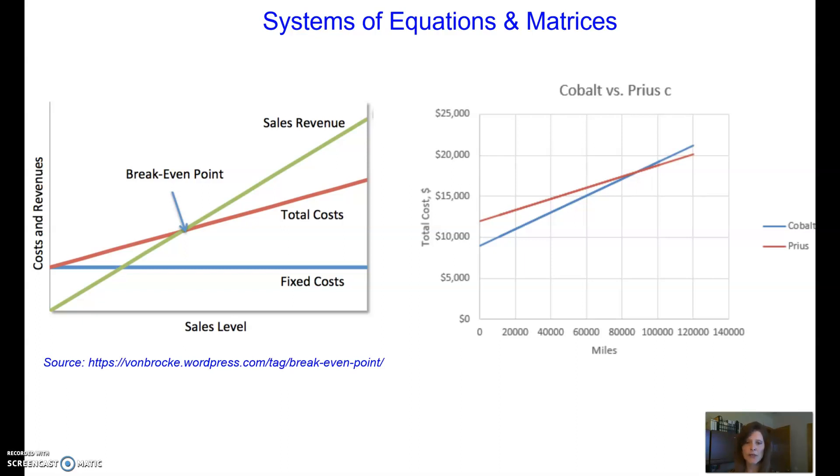So the Prius in my example here is going to have a higher purchase price than the Cobalt, but it gets better gas mileage. So when I extend out, based on the gas mileage and the initial prices, extend out these two graphs, I am able to determine that it's about 90,000 miles where the Prius becomes a little more economical.